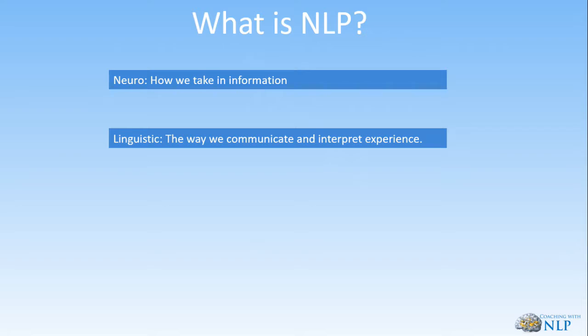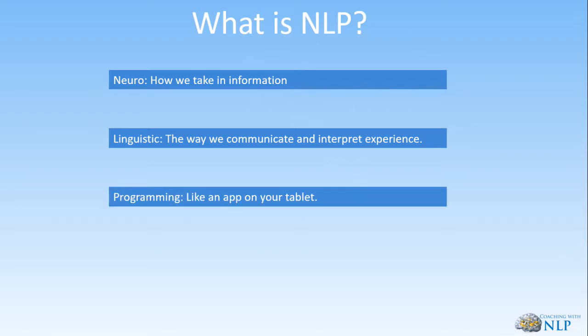Then we've got Linguistic, and this is the language and other nonverbal communication systems through which our neural representations are coded, ordered, and given meaning. This includes the six things we do inside our heads: we create pictures, sounds, feelings, tastes, smells, and we also talk to ourselves — the self-talk. This is how we communicate and interpret our experience, and it also includes our body language.